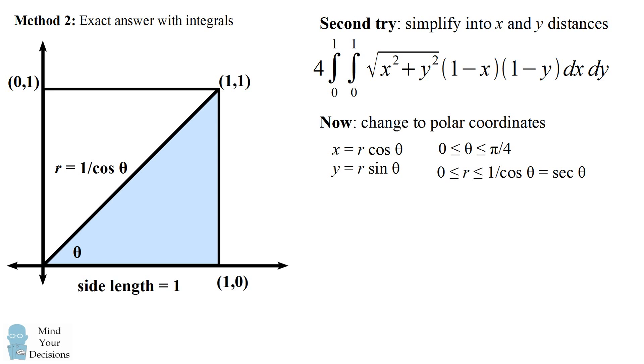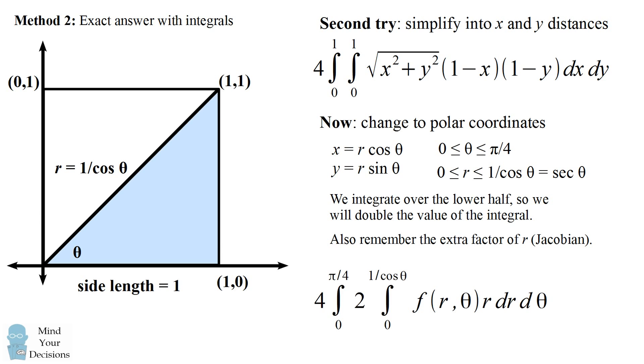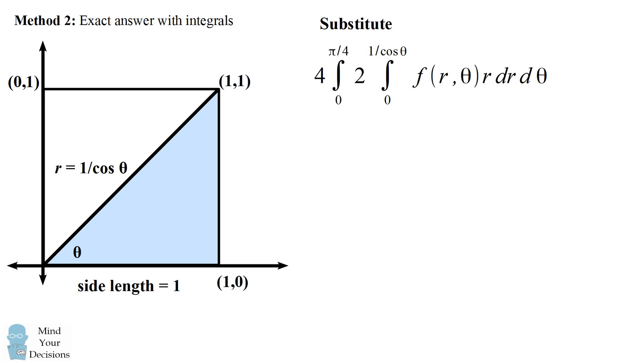We can now rewrite our integral. We have to remember that we're only integrating over the lower half, so we want to double the value of the integral. We also want to remember that we have an extra factor of r when we change into polar coordinates. So our polar coordinates integral will look something like the following double integral. We have the extra factor of 2 because we're only integrating over the lower half, and then we're going to rewrite our distance function and density function in terms of polar coordinates, which we then multiply by r, and then we have dr d theta. We also have our new limits of integration. So now let's go ahead and substitute and try and figure out this integral.